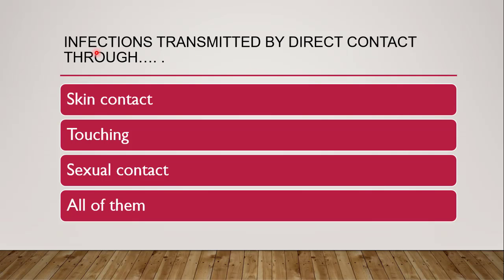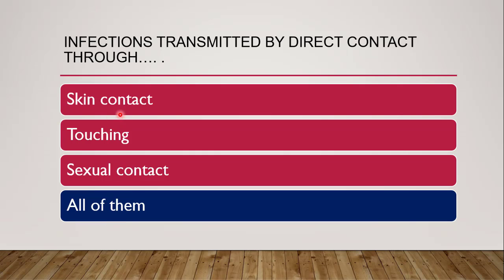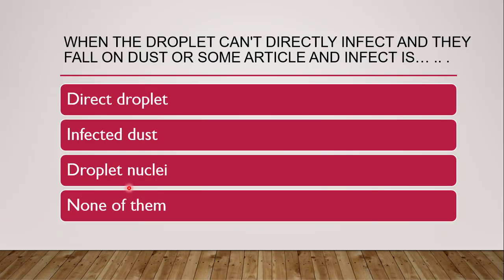Next question: infections transmitted by direct contact are possible in which ways — skin contact, touching, sexual contact, or all of them? The correct answer is all of them. Infections transmitted by direct contact are possible through skin contact, by touching, by sexual contact, or by the bite of any infected animal or infected host.